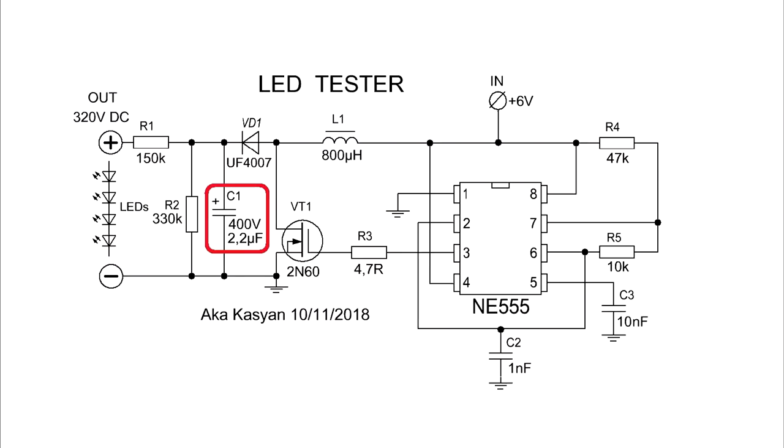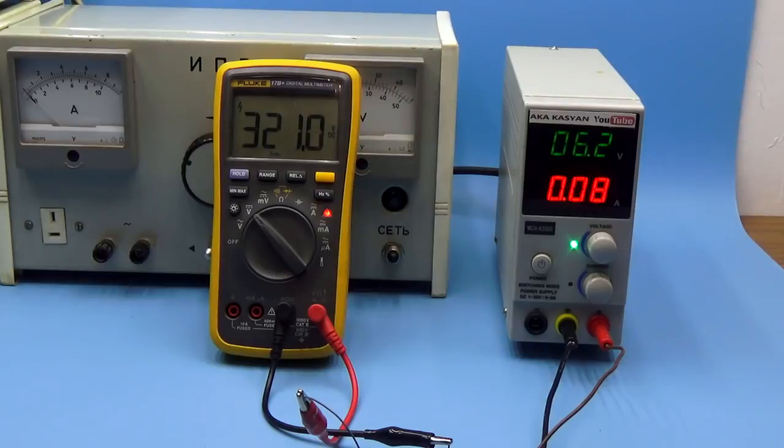At idle, the voltage on the capacitor will increase, which will lead to its breakdown. Therefore, a load resistor is added to the circuit. The same resistor discharges the capacitor after power is turned off.